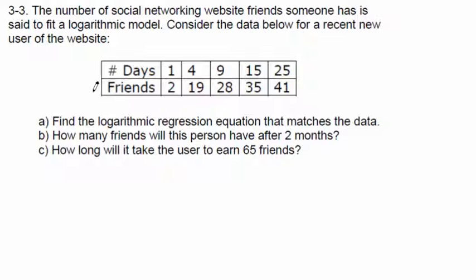It's the same steps over and over: you're going to make list one, make list two, plot the dots, calculate the regression equation, paste it into your y-equals graphing editor, hit graph, play around with the window until everything fits, find the value of the function for a particular x, and find the value of x for a particular y. Whether it's a line, a quadratic, an exponential — it's the same stuff.